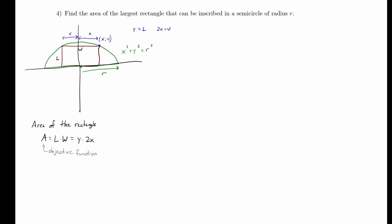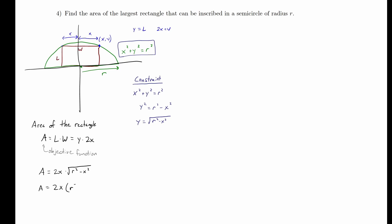Now we need to eliminate a variable. Our constraint is that the point (x, y) lies on the circle, so x squared plus y squared equals r squared. Subtracting x squared from both sides gives y squared equals r squared minus x squared, so y equals the square root of r squared minus x squared. We plug this into our area function. Before differentiating, we rewrite the square root as a one-half power.